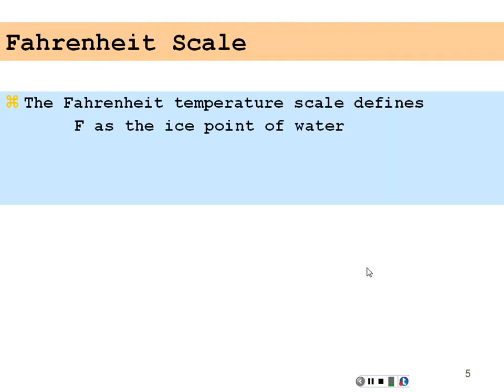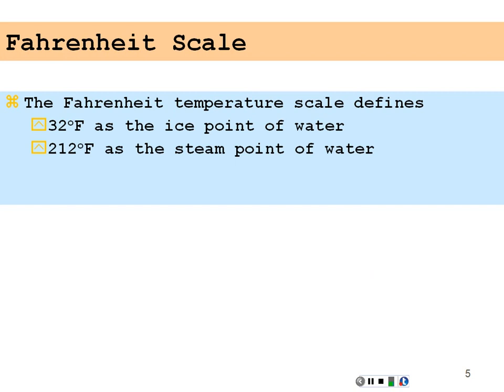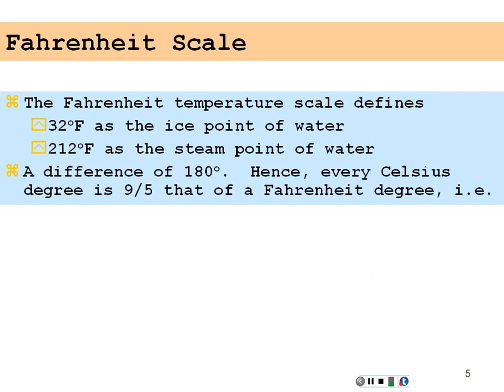The Fahrenheit scale defines 32 degrees Fahrenheit as the ice point of water, 212 degrees Fahrenheit as the steam point of water — a difference of 180 degrees. Hence every Celsius degree is nine-fifths that of a Fahrenheit degree. The temperature in Fahrenheit is nine-fifths times the temperature in Celsius plus 32. This is our basic conversion.